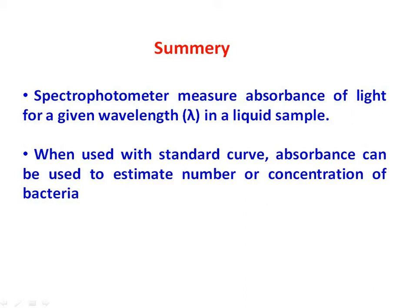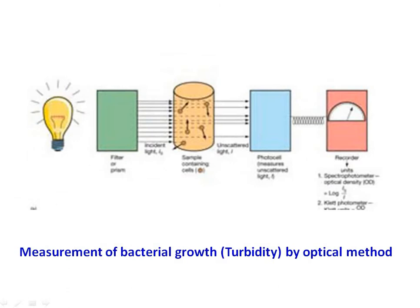Cell mass and number are also obtained by using turbidity measurement by optical density method. Turbidity is developed in the liquid medium due to the presence of cells which make a cloudy appearance to the eye. When the sample is more turbid, it means more cells are present, hence more light is scattered.